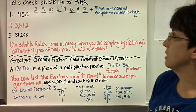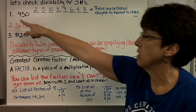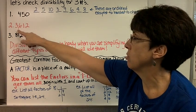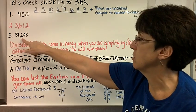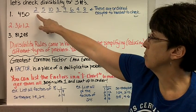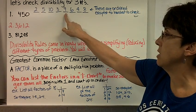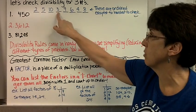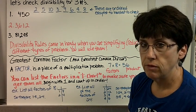Let's check divisibility for these three numbers. So take a minute and write this chart down. Write number 1, 450. Number 2, 3,612. Number 3, 81,248. And then put 2, 5, 10, because those are the easiest. 3, 9, those are pretty easy. 6, because you need to know 2 and 3. And then 4, 8 along the top. I'll stop the video and do that now.